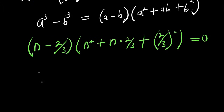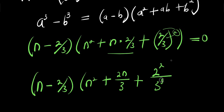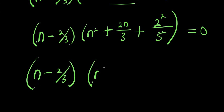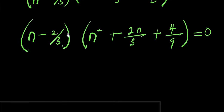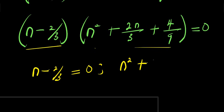So from here we have (n minus 2/3) equals 0. And expanding fully: (n minus 2/3)(n² plus 2n/3 plus 4/9) equals 0. The next step is to equate each factor to zero: n minus 2/3 equals 0, and also n² plus 2n/3 plus 4/9 equals 0.